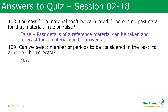Can we select the number of periods to be considered in the past to arrive at the forecast? Yes, there is an option to select the number of periods. For example, if you take the last six months sometimes it may be okay, and sometimes you have to take only the last three months. So you have to select the appropriate number of periods to run the forecast.